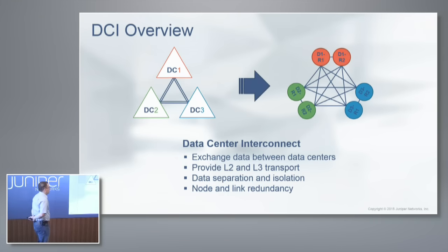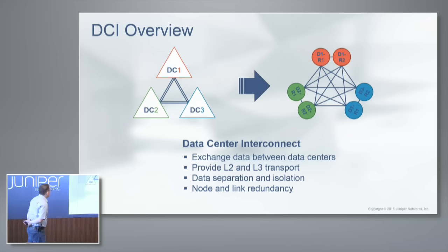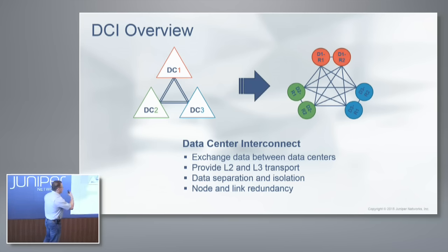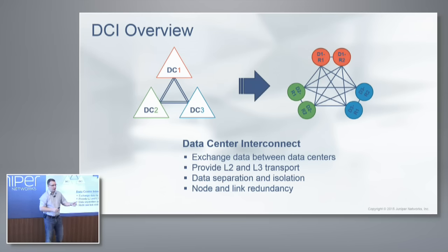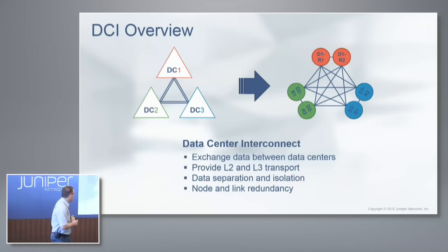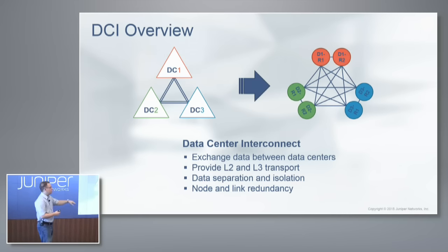At a high level I want to focus on two use cases, the first one being DCI. When you take a look at DCI you want to do a couple of different things. Obviously you want to exchange data between data centers, providing both Layer 2 and Layer 3 transport between multiple data centers. On top of that you need data separation, isolation, and redundancy for your links and nodes.